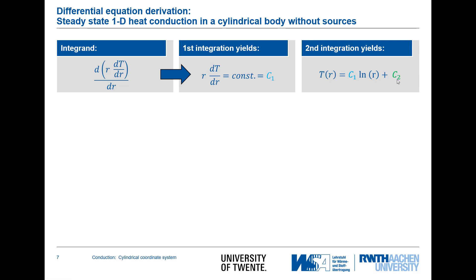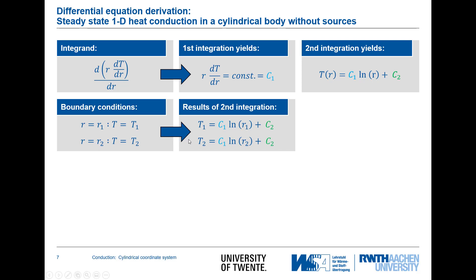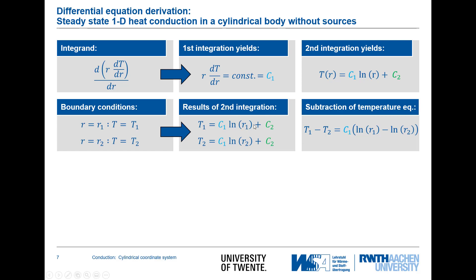This is the equation for the temperature profile, but we still need expressions for the two constants C1 and C2. Applying boundary conditions: T(r1) = T1 and T(r2) = T2. We obtain two explicit equations for T1 and T2 in terms of ln(r1), ln(r2), C1, and C2. Subtracting one equation from the other eliminates C2, leaving us with an expression involving only C1.